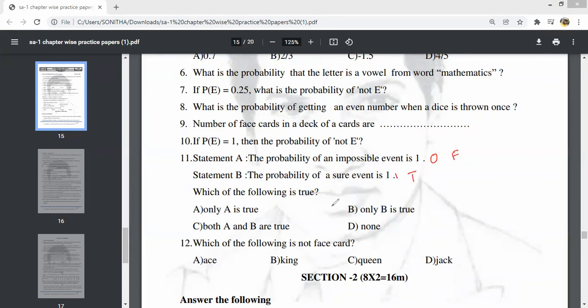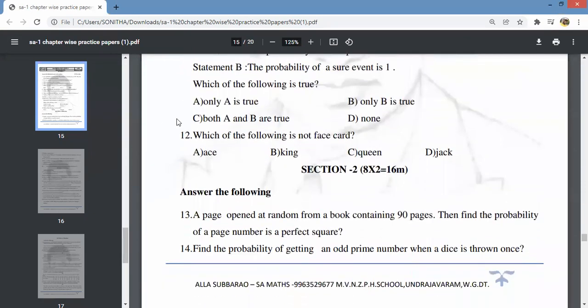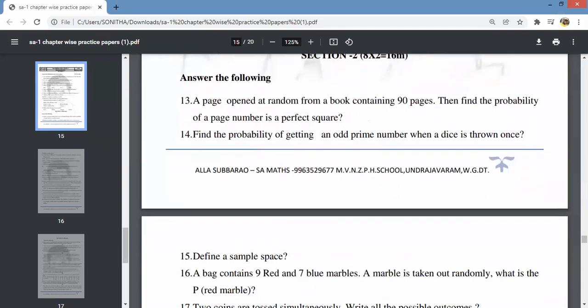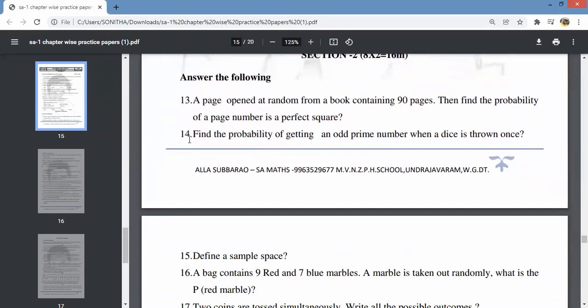Probability of a sure event is 1. This is true. So only option D is true. Which of the following is not a face card? Ace card is not a face card, so option A is the right answer.